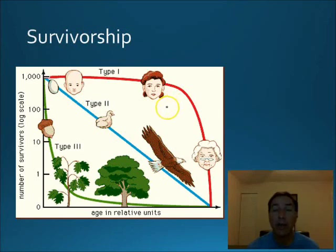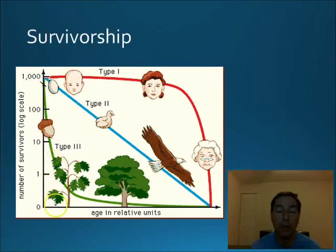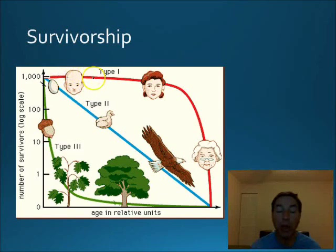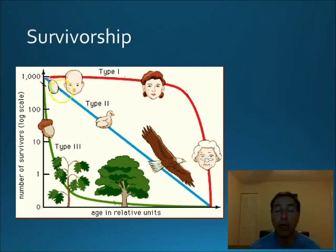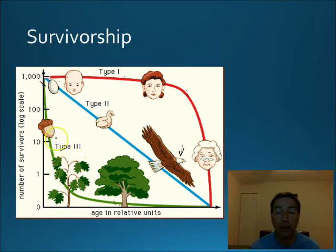Now we have to look at survivorship curves. R-selected species tend to follow the Type 3 survivorship curve — they have many young at the start, but very few reach adult life, like an acorn. K-selected species follow the Type 1 curve — very few young, but organisms stay alive longer and drop off mainly in old age. Type 2 survivorship, seen in birds, falls in between, with a roughly linear decline in survival over time.